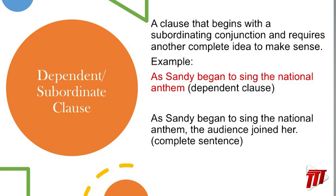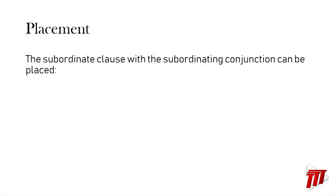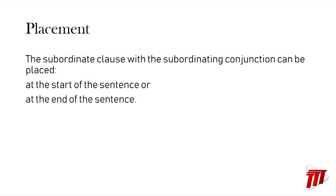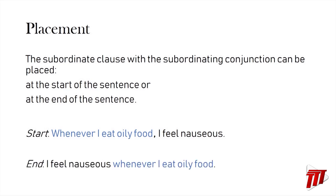Let's talk about how we place subordinating conjunctions and subordinating clauses. The subordinate clause with the subordinate conjunction can be placed at the start of a sentence or at the end. For example, at the start: "Whenever I eat oily food, I feel nauseous" — the subordinating conjunction "whenever" is at the beginning. But you can also have it at the end: "I feel nauseous whenever I eat oily food."